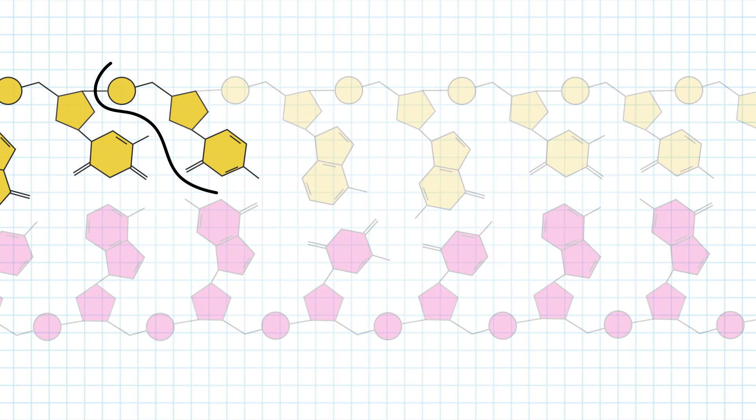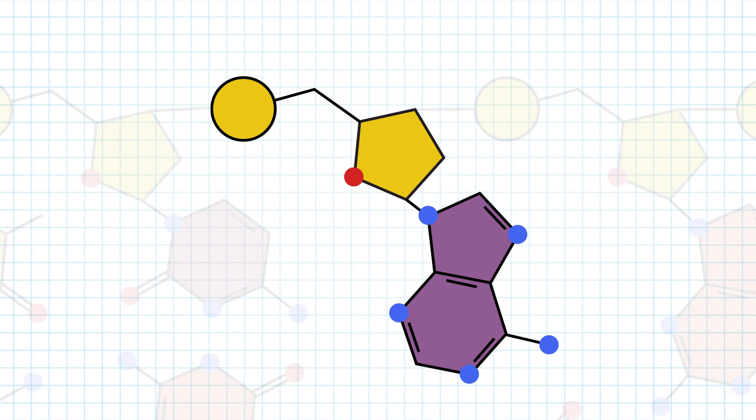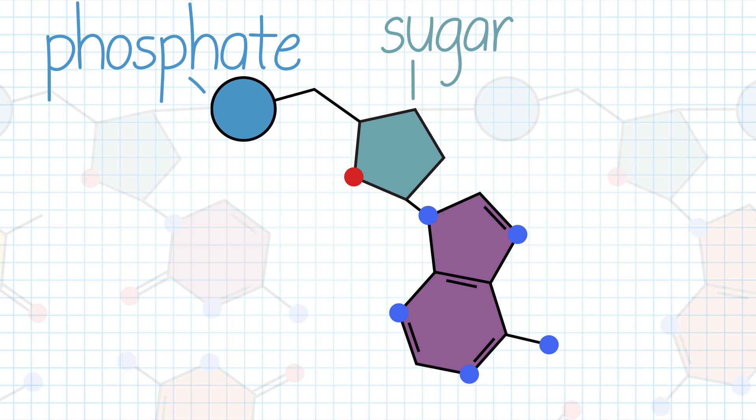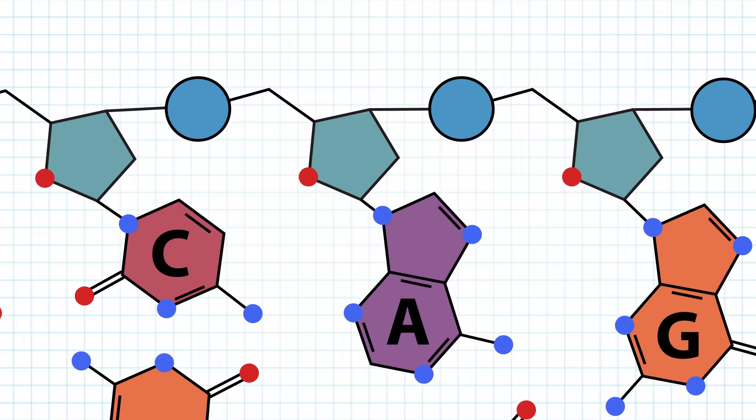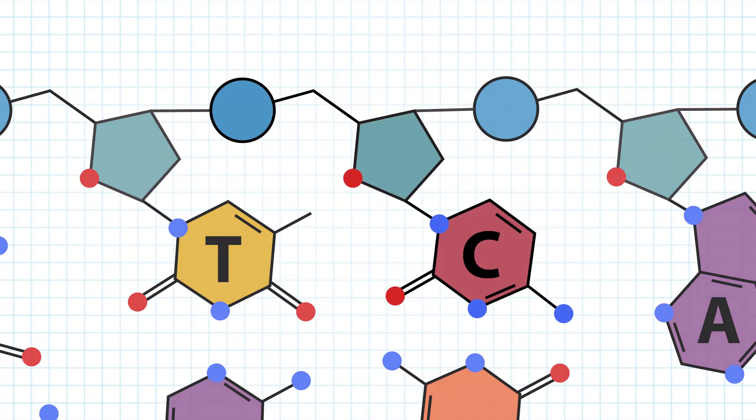Each strand is a polynucleotide, meaning the strand is made up of many individual units called nucleotides. A nucleotide has three components: the 5-carbon sugar, a phosphate group, and one of four possible nitrogenous bases: adenine, guanine, thymine, and cytosine.